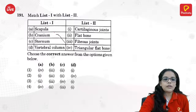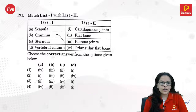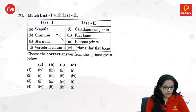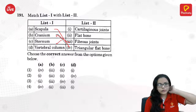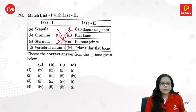Match the bone type: scapula is a triangular flat bone. Cranium is in the head with fibrous joints. Sternum is a flat bone. Vertebral column has cartilaginous joints. Scapula is A4.